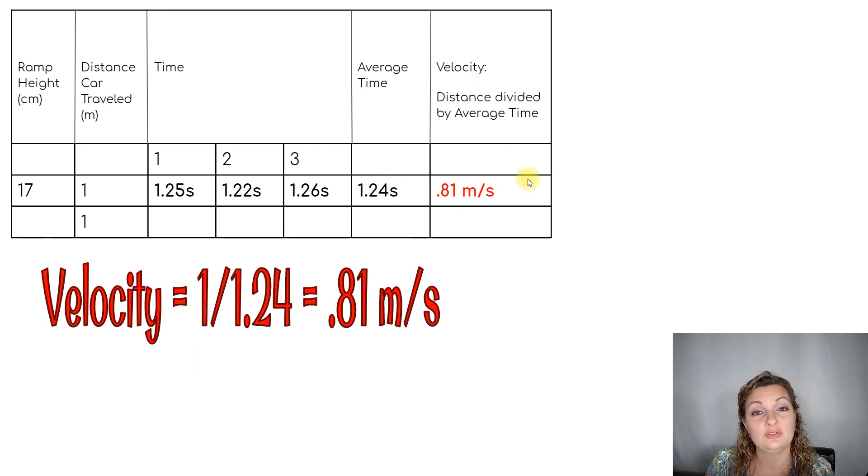So we went ahead and put in our average time here. Now we need to go ahead and calculate our velocity, in other words, the speed at which the car is really traveling. So we're going to go ahead and do our distance divided by our average time. Well, our distance, we stopped the timer at the one meter mark, so we know it went a distance of one meter. And we're going to divide that by our average time, which we just calculated at 1.24 seconds. So I went ahead and did the math and I got 0.81 and our units are going to be meters per second.